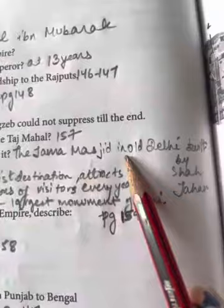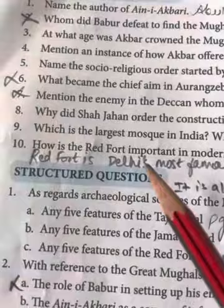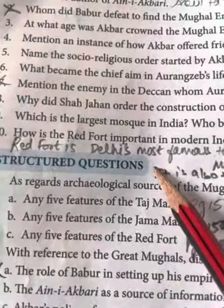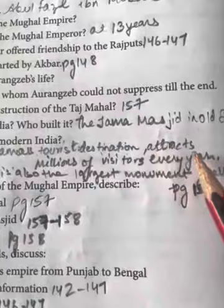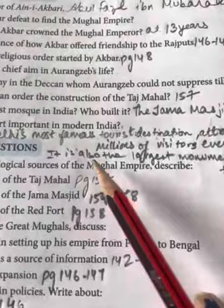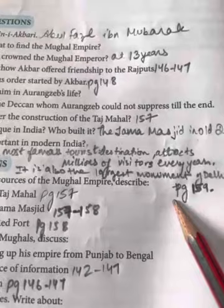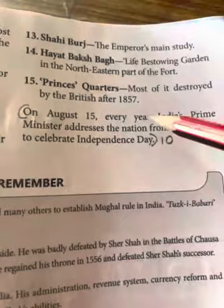Then question 10: How is the Red Fort important in modern India? Red Fort is in Delhi and is Delhi's most famous tourist destination. It attracts millions of visitors every year. It is also the largest monument of Delhi. Continue writing the last 3 lines from page number 159 as part of your answer 10.